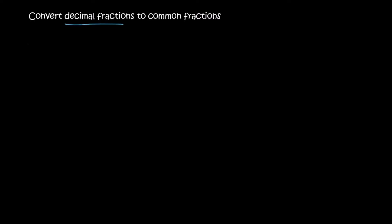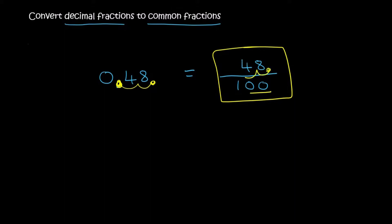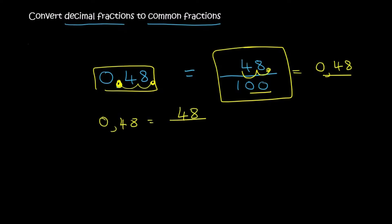Now what we need to know is how do we go from a decimal back to a common fraction. For example, given 0.48, you need to convert that to a common fraction. You always try to get the decimal back to the end. That's two decimal places, which means the original fraction must have had 100 at the bottom, and the original number was 48. So 0.48 becomes 48 over 100.